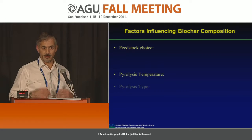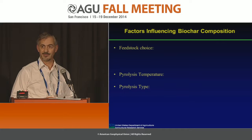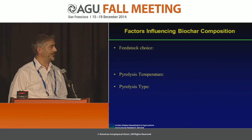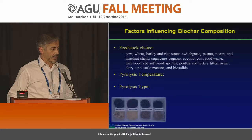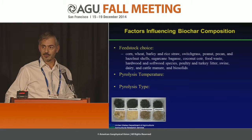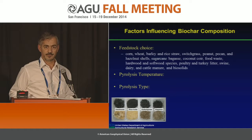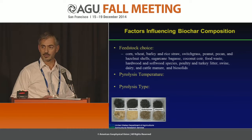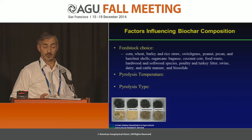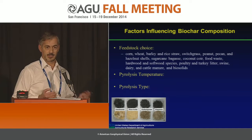One could argue that there are three main factors that influence the outcome of that final product: feedstock choice, pyrolysis temperature, and pyrolysis type. When we look at feedstock choice, we have a huge range of feedstocks that we can draw from — from agricultural grasses to hardwoods and softwoods to manures. Depending on what you choose as your feedstock input, you end up with a completely different product.